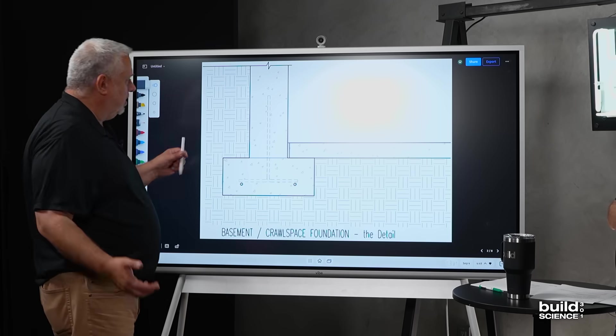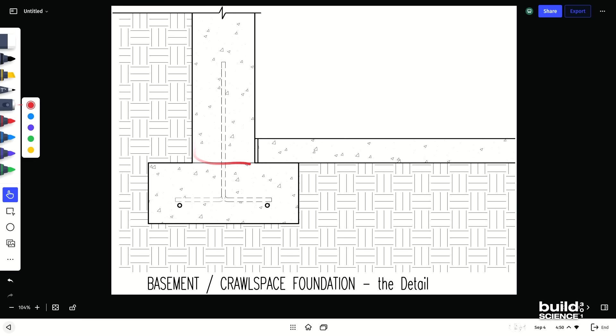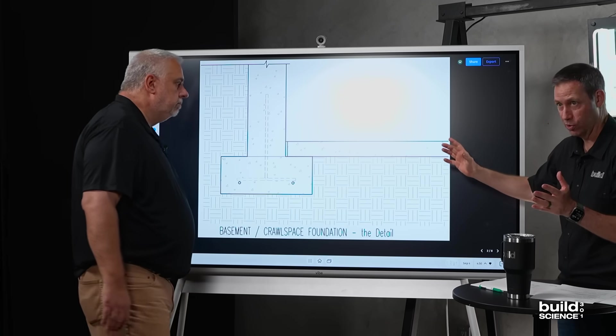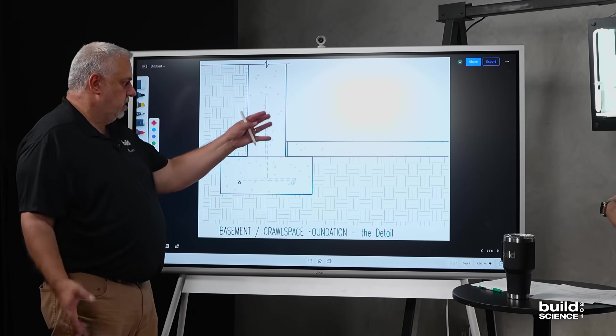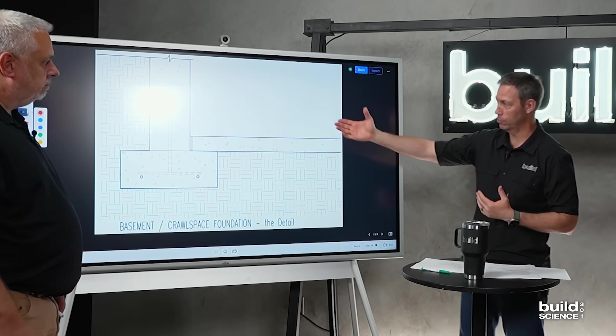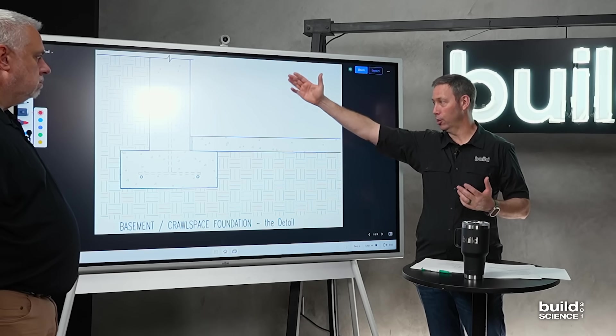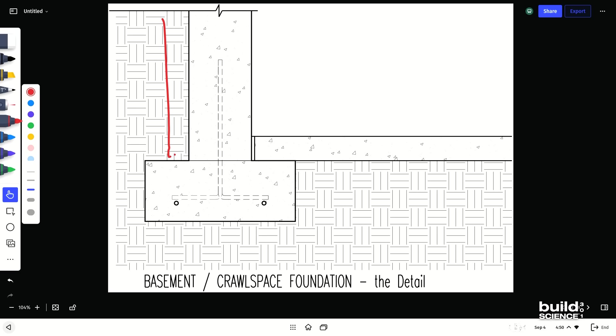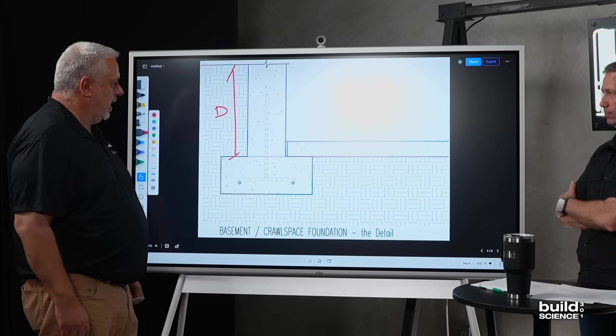Mother Nature's not up there on her canvas saying, oh, that's a crawl space, let's do this, or that's a basement, let's do this. She writes a set of laws. They apply. Basement, crawl space, same thing. The detail, pretty standard, right? Foundation wall, slab, footing. Three pieces. One caveat would be if you had a crawl space, often this slab is omitted, but the forces are the same.